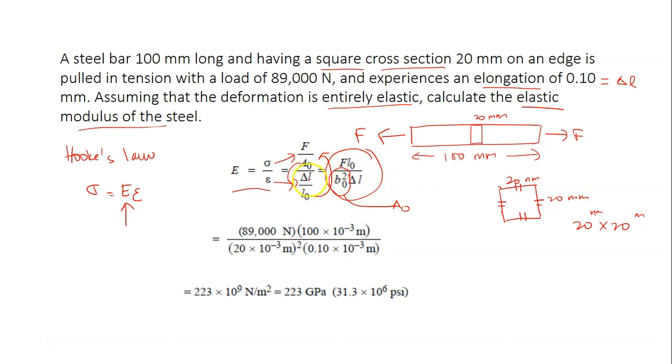And then you just plug in all the values. This is your F. And this is your L₀. L₀ is 100 times 10 to minus 3 mm, because it says here that the bar, the specimen is 100 mm long. And this is your L₀.